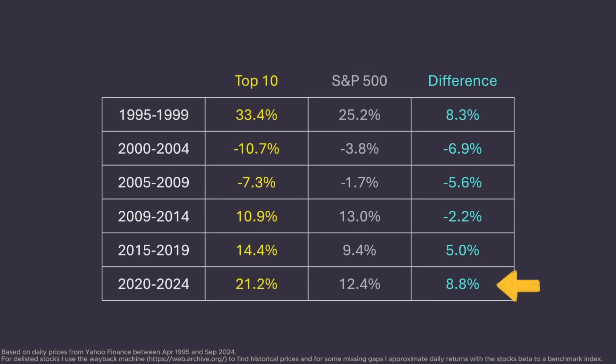You can see this as well when splitting the performance in half-decades, in increments of five years. The outperformance of the top 10 seen so far during the current decade looks ominously similar to the outperformance seen just before the dot-com bubble.